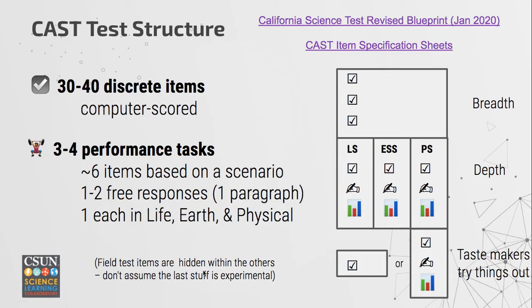There's also a third category of questions not included in your student scores, where test makers are trying things out. These are called field test items, and they're actually hidden within the others, so you can't exactly be sure when you're looking at a question whether it's experimental or whether it's actually going to count — they're all mixed together.